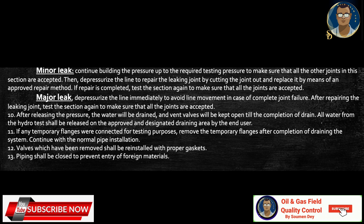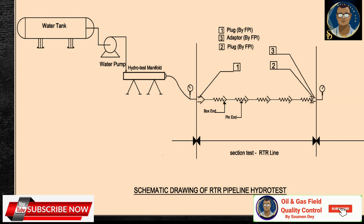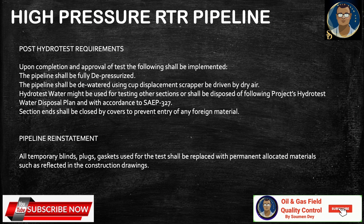Valves which have been removed shall be reinstalled with proper gaskets, and piping shall be closed to prevent entry of foreign materials. The setup schematic for the RTR pipeline hydrotest shows a water tank feeding through a water pump to the hydrotest manifold, from which controlled flow enters the pipeline system. Post-hydrotest requirements include: fully depressurizing the pipeline, dewatering using cup displacement scraper driven by dry air, disposing of hydrostatic water per the project hydrotest water disposal plan and client standard, closing section ends with covers, and replacing all temporary blinds, plugs, and gaskets with permanent materials as reflected in the construction drawings.